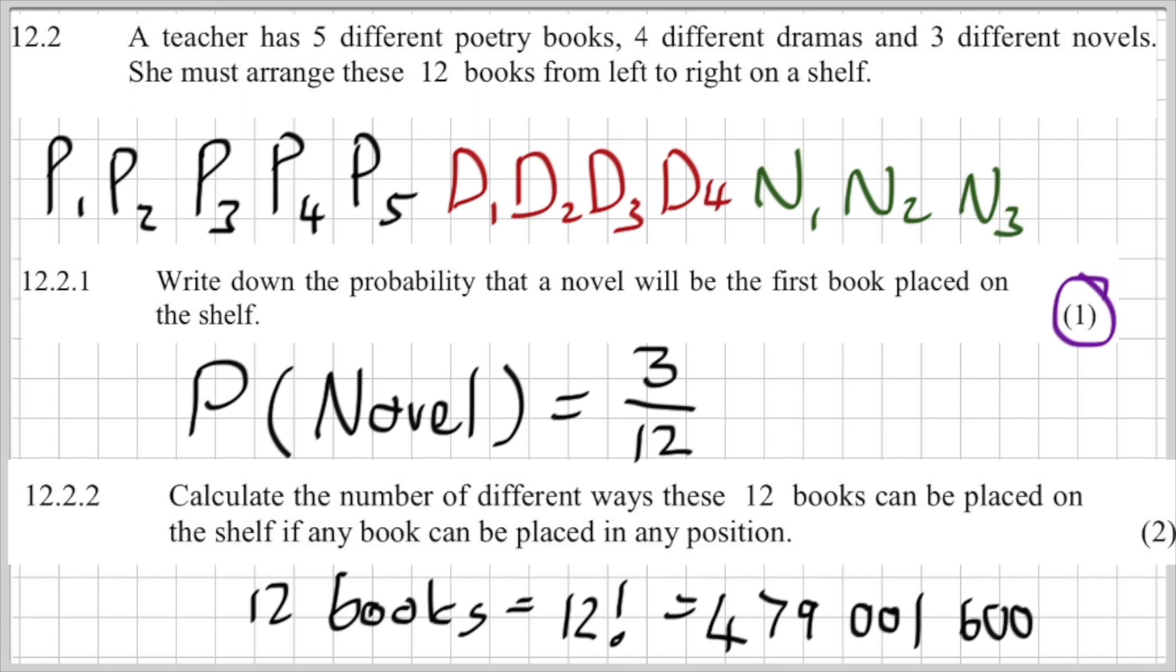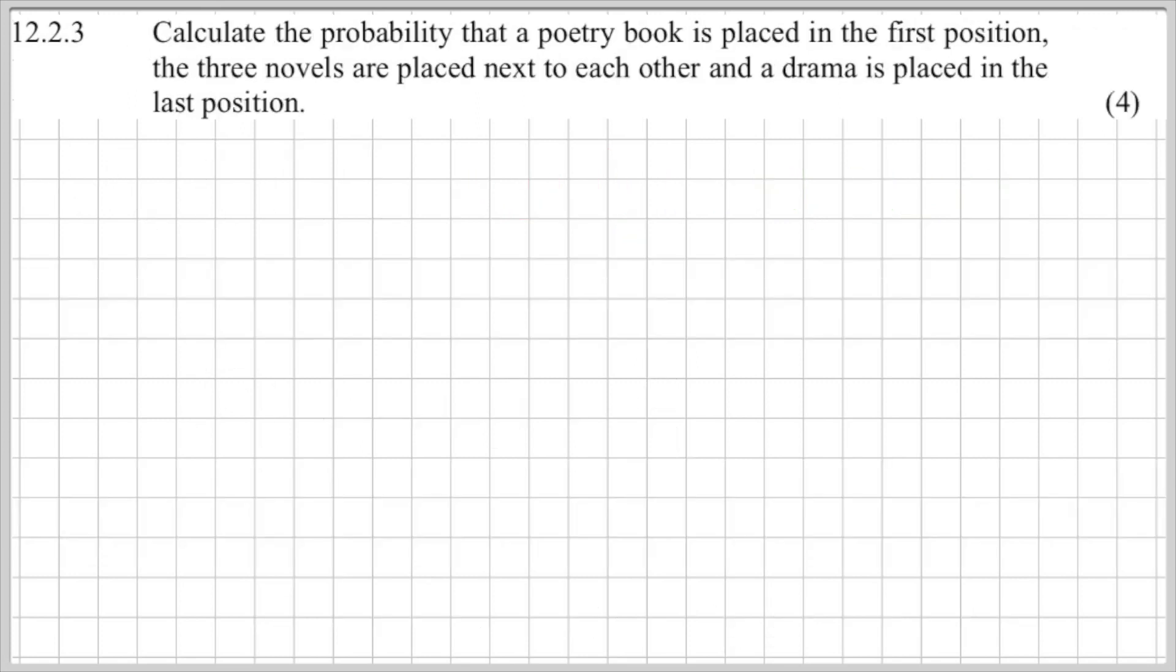Question 12.2.3: calculate the probability that a poetry book is placed in the first position, the three novels are placed next to each other, and a drama is placed in the last position. I want you to hone in and understand that every single one of these things that they said is very important. So what I'm going to do is let's quickly analyze. A poetry book is placed in the first position so I'm going to draw it there, and it is set in stone, I cannot move that little block.